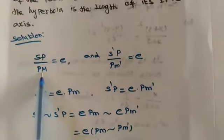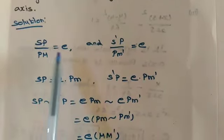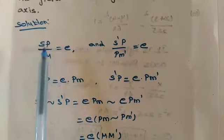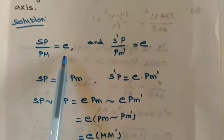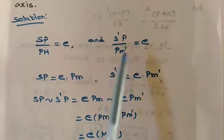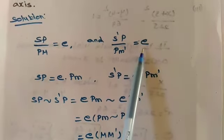We are going to prove that result. So first take the conic definition. Now I am taking the conic definition. SP by PM is equal to e and S dash P divided by PM dash is equal to e.